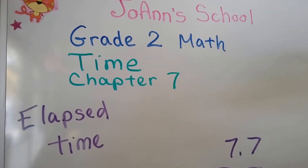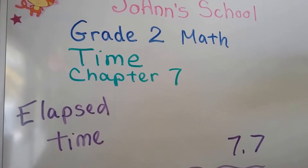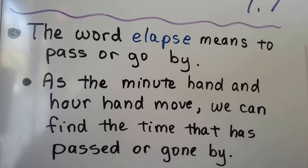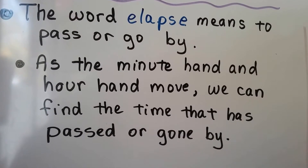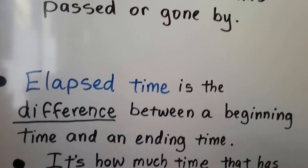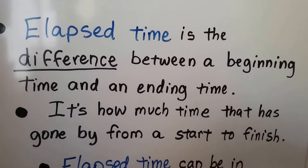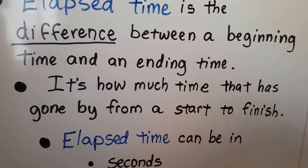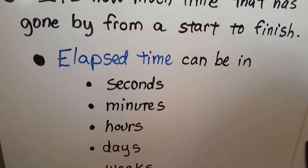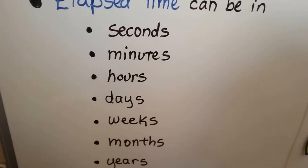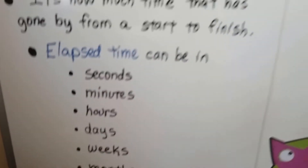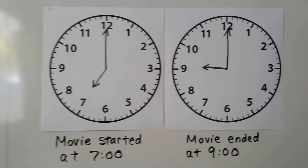We're going to talk about elapsed time in this lesson. The word elapse means to pass or go by, and as the minute hand and the hour hand move we can find the time that has passed. Elapsed time is the difference between a beginning time and an ending time — how much time has gone by from start to finish. An elapsed time can be in seconds, minutes, hours, days, weeks, months, years, decades, or even centuries.